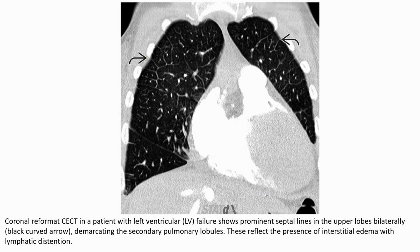This is a CT coronal reformation in a patient with left ventricular failure. There are prominent subtle lines in the upper lobe bilaterally — Kerley lines — indicating secondary pulmonary lobule demarcation. This reflects the presence of interstitial edema with lymphatic distension.